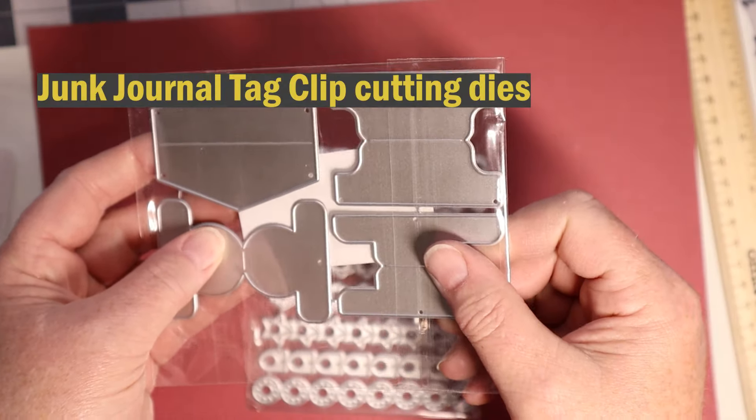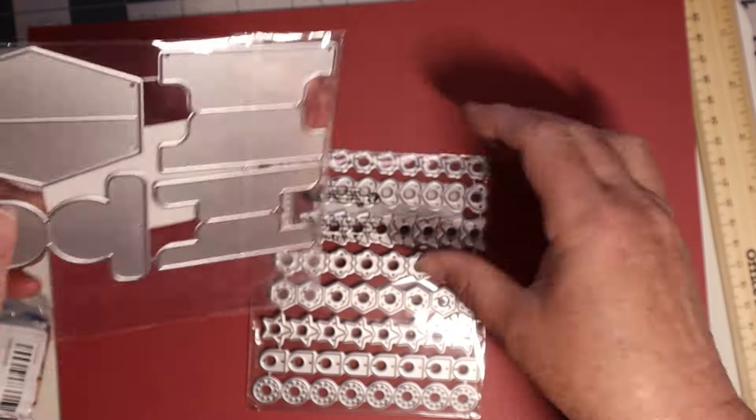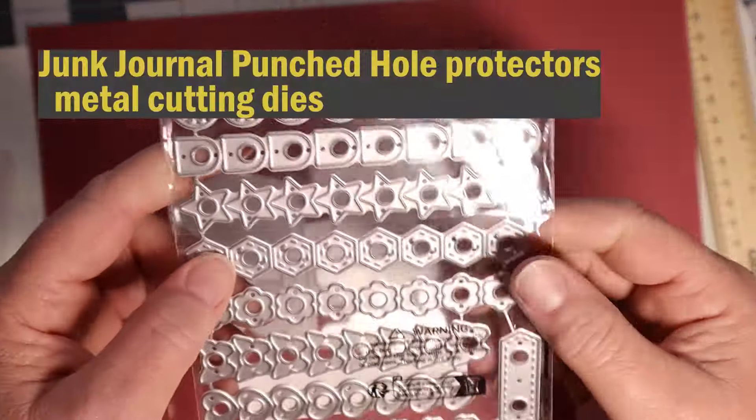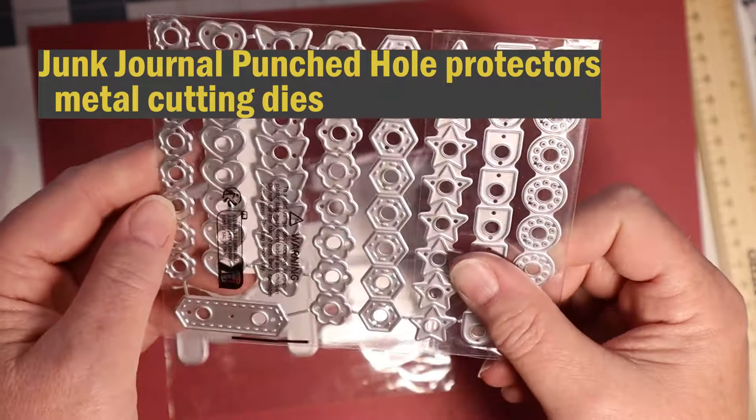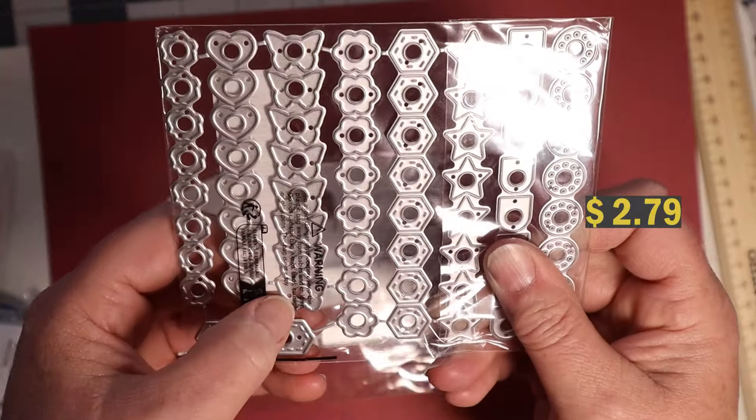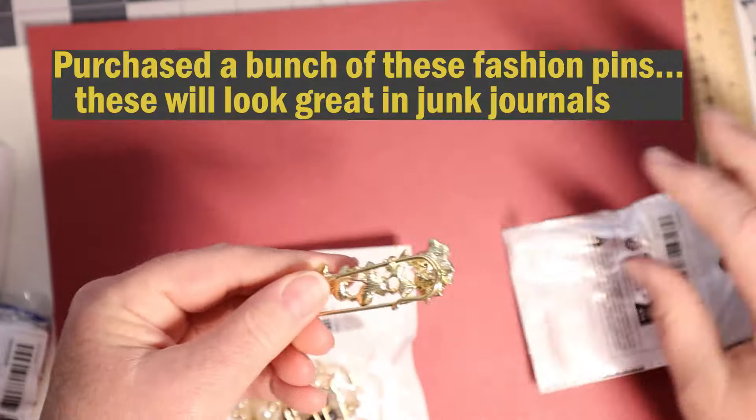And this is a little tag clip put on top of your little like library cards and stuff like that for your junk journals. This next item here is for metal die for hole protectors for your tags and things like that comes in all different styles and you can punch this out any papers you want.